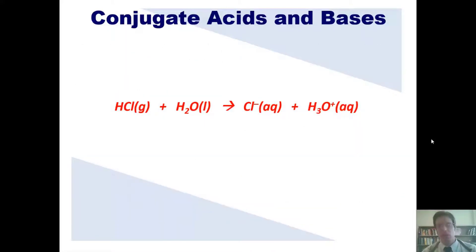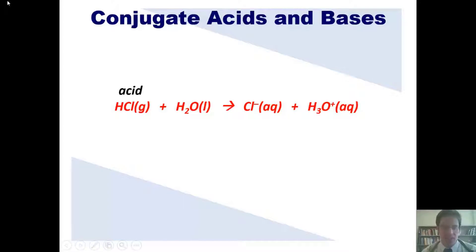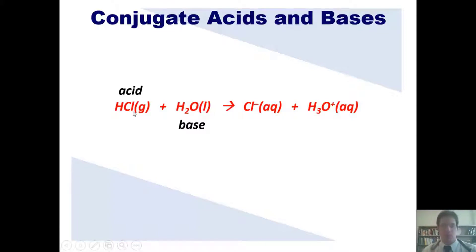Let me clarify. For this reaction, we look at the left side of the equation and identify one as the acid and the other as the base. The thing that gives up a hydrogen as you move from left to right is the acid — that is HCl. The thing that accepts that hydrogen is the base, in this case water. As the H is removed from HCl, what's left over is chloride, Cl-. Chloride is the thing produced from the acid, so chloride is that acid's conjugate base.